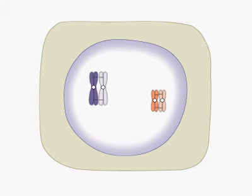Homologous chromosomes associate. Crossing over occurs between non-sister chromatids.